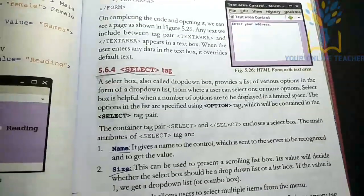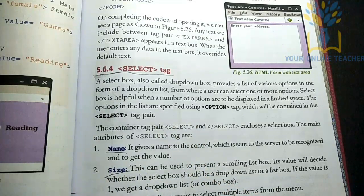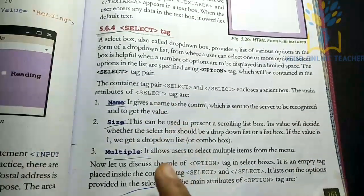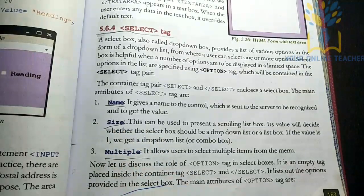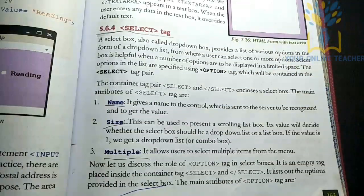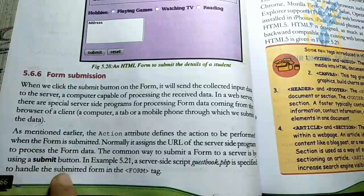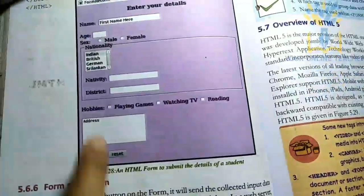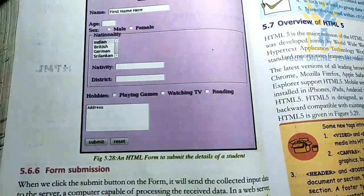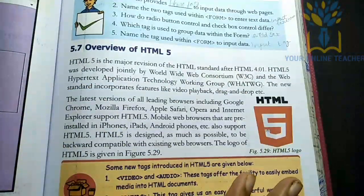Next is the select tag, which creates a dropdown box. We have to select options using the <option> tag inside the <select> tag. The select tag has attributes: name, size, and multiple. You can also use the submit tag to submit the form. We use the submit tag to send the form data.